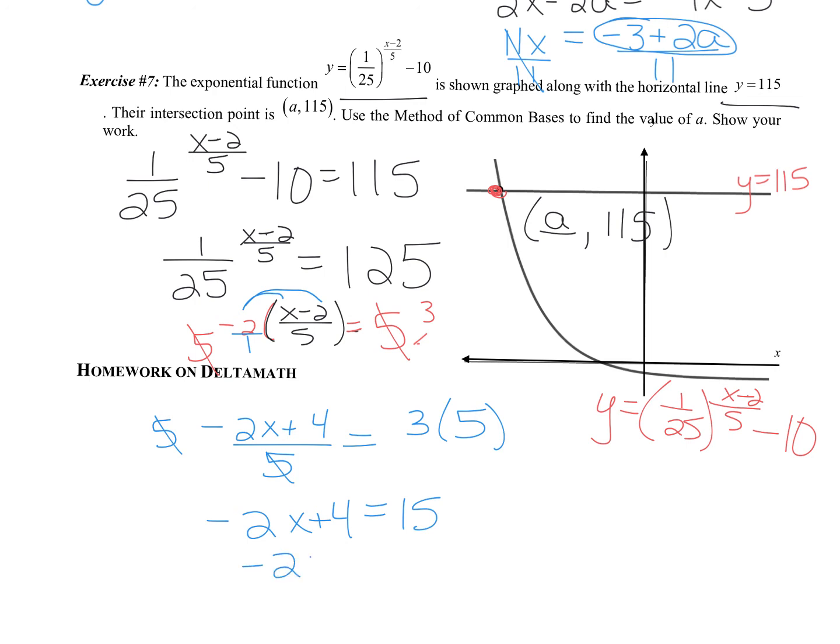Subtracting 4, I get 11. Dividing by negative 2, I get x equals negative 5.5 or negative 11 over 2. Either way is correct. So I'm just going to change this over to an a, right? Because we're trying to find the value of a. And if I graphed these two, if I actually graphed them on my calculator, I would see that they intersect at the point negative 5.5, 115.